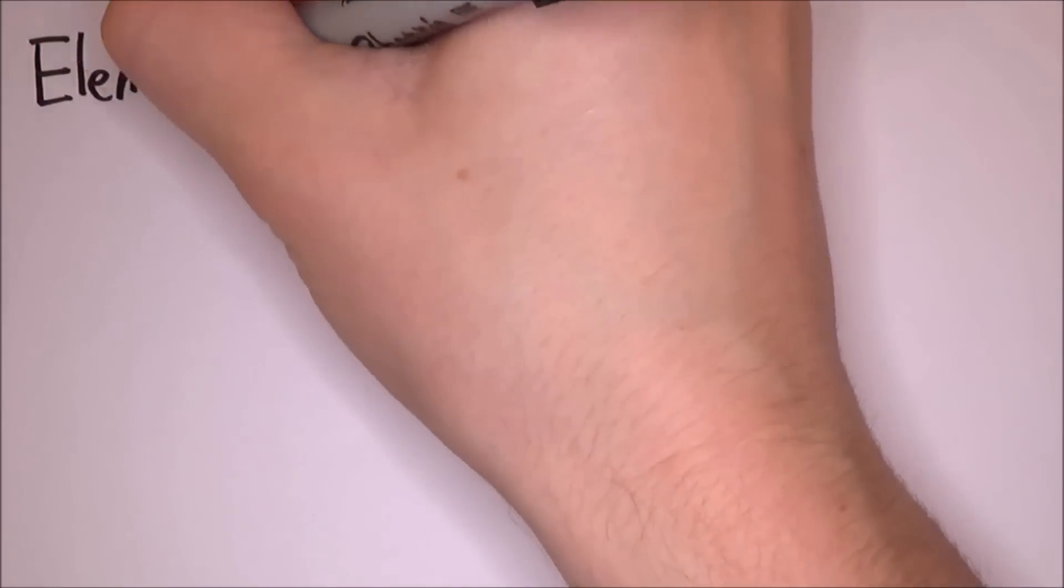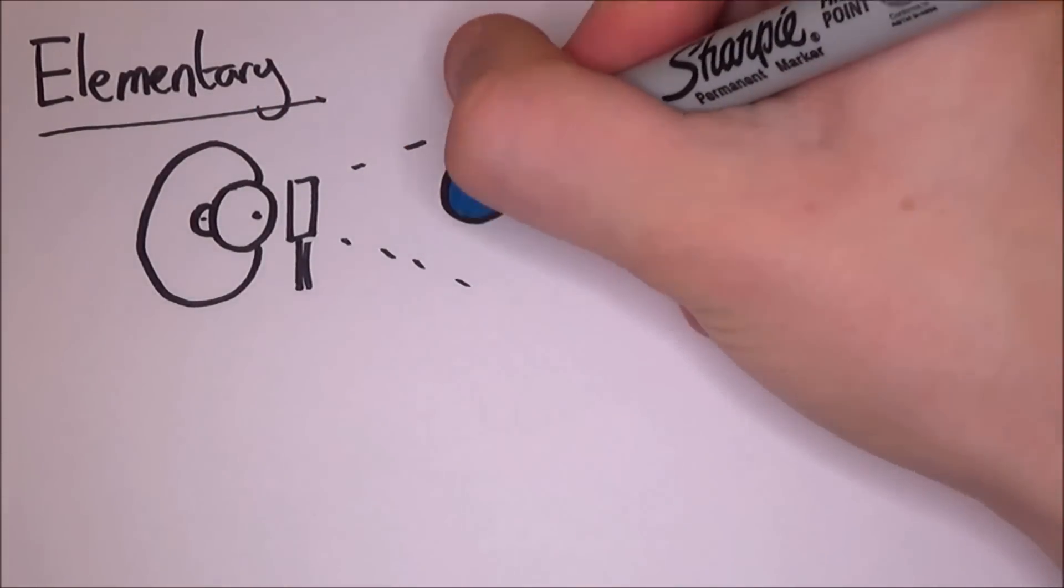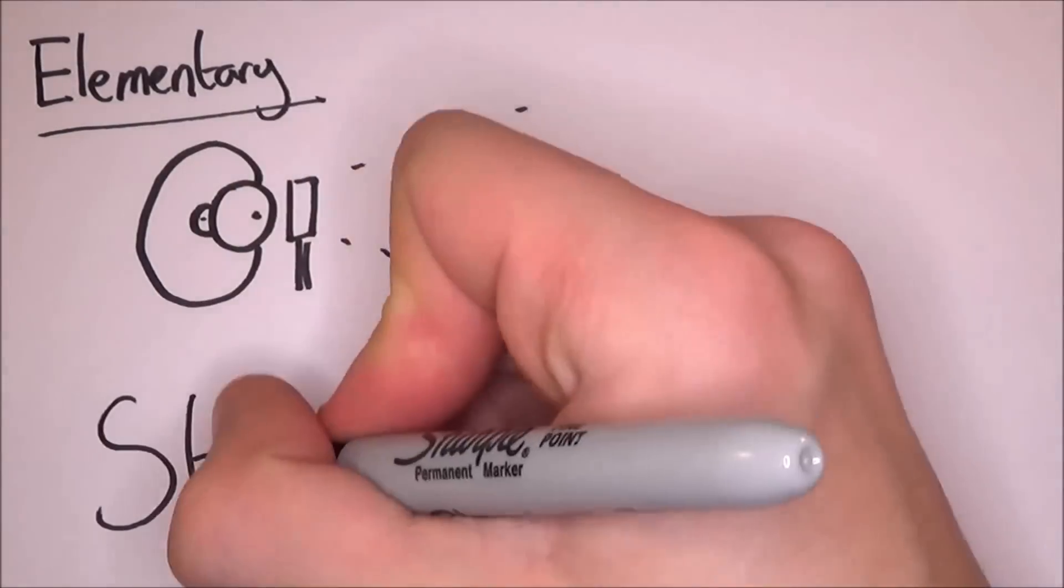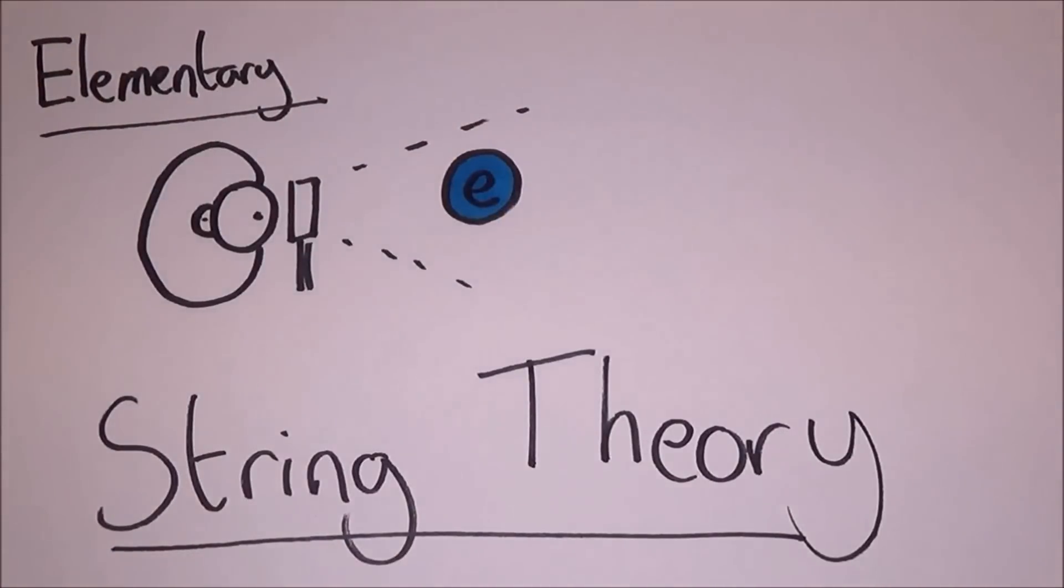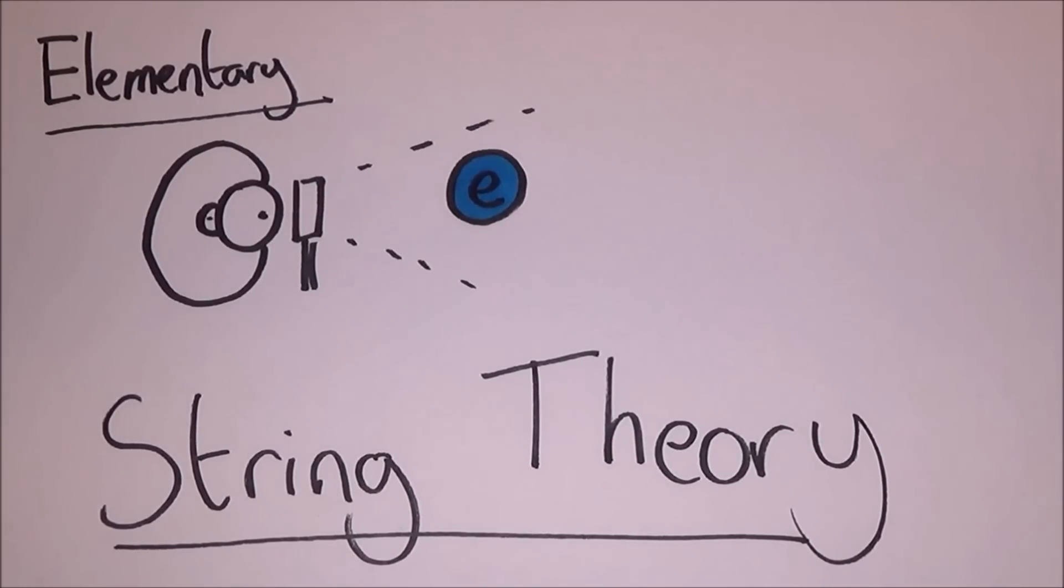Elementary particles are ones which have no substructure, or at least nothing that theoretical physicists can come up with and then agree on. Now, this is actually where string theory comes in, but that's for the next video.